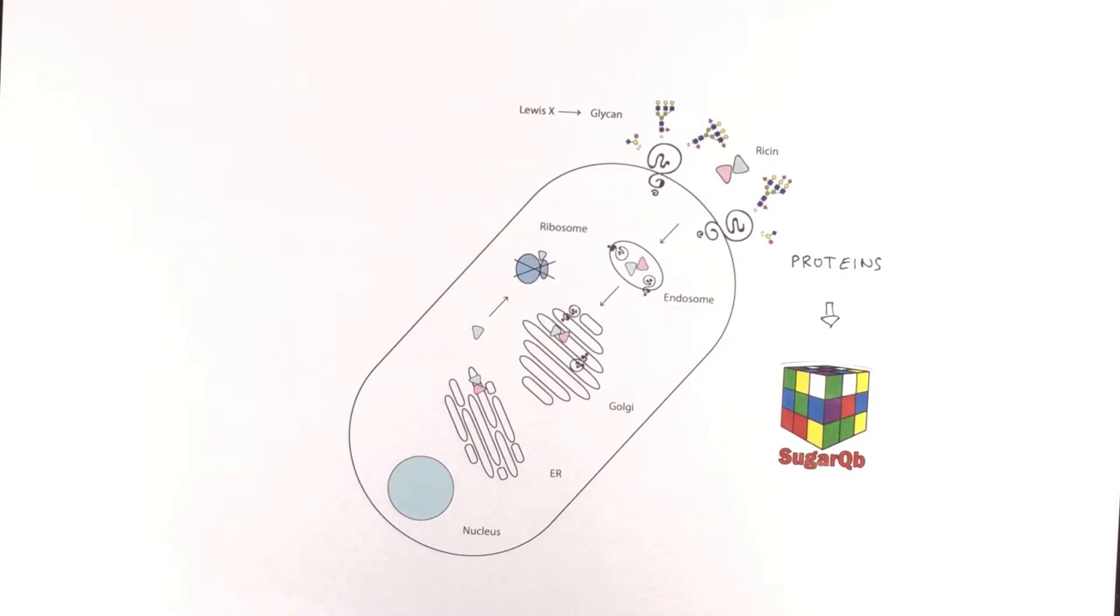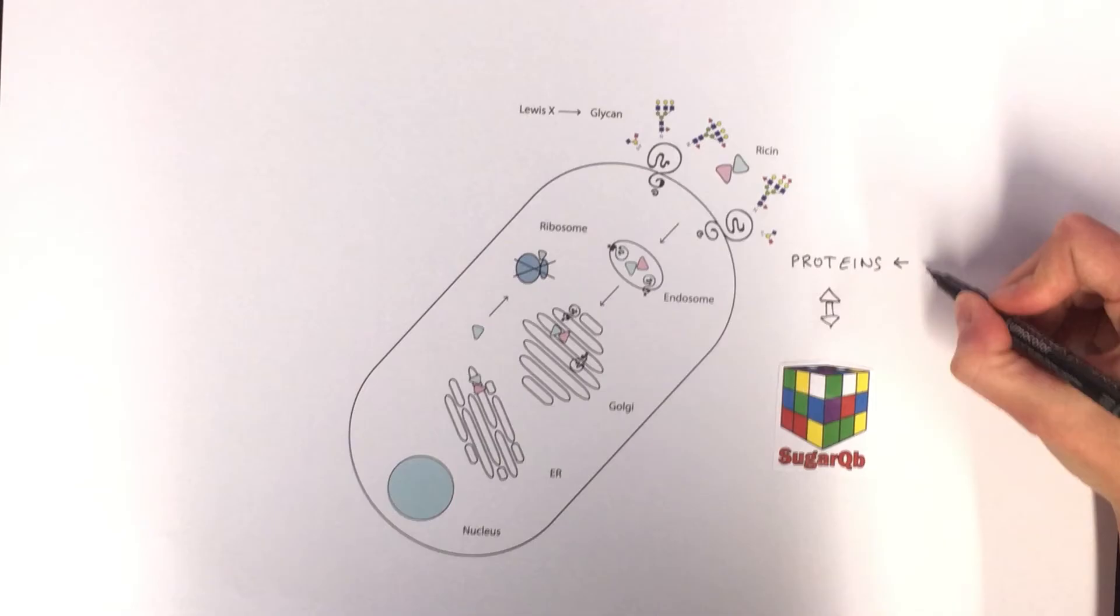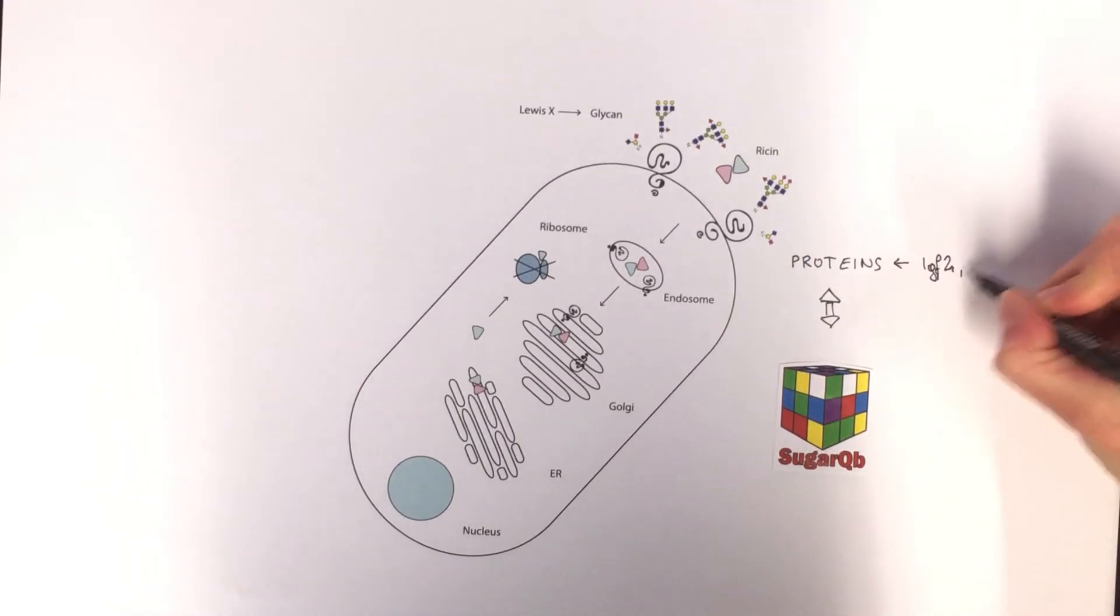This method allowed us, for the first time, to describe all glycans and their underlying glycopeptides of a cell at once. Using Sugarcube, we identified several glycopeptides that harbour Lewis-X, such as IGF-2R and LAMP1.